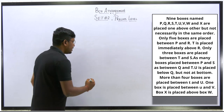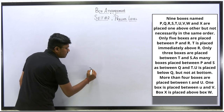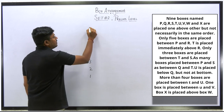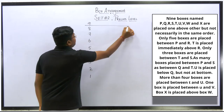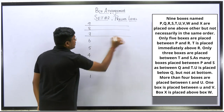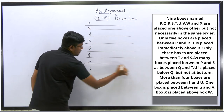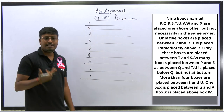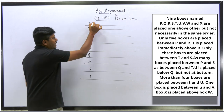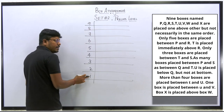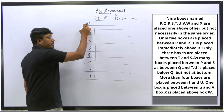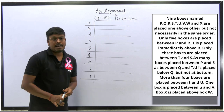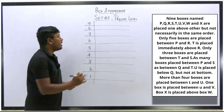Nine boxes named P to X are placed one above the other, but not necessarily in the same order. So totally there are nine boxes. I will identify each box by a number since it's easier — starting from the bottom-most box as position 1 up to the top-most box as position 9.